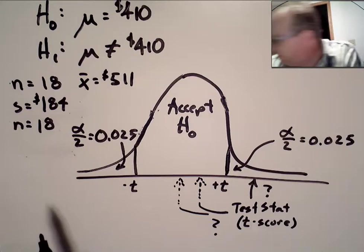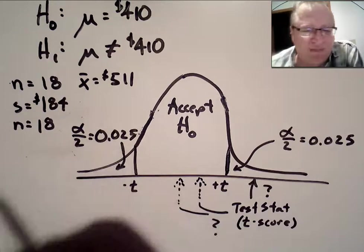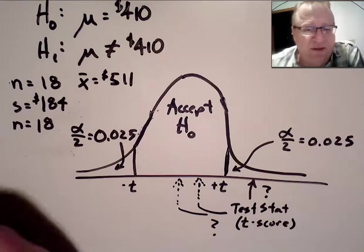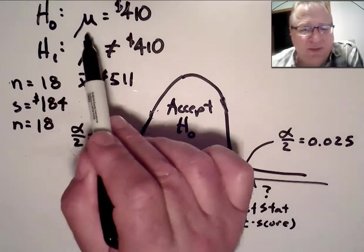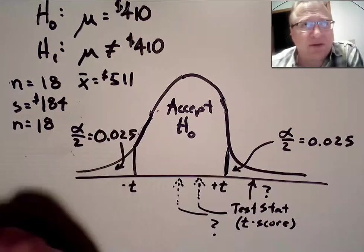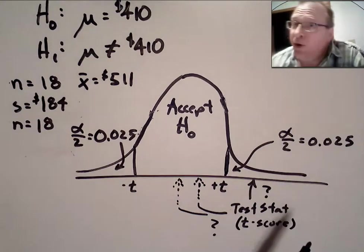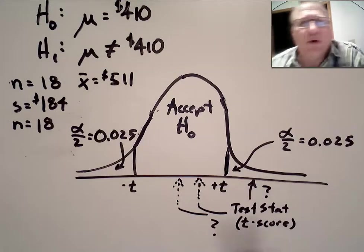This is an example out of your book on page 331. We're looking at the amount of money in people's accounts. The null hypothesis is that the population mean, the average amount that people have in their accounts is $410. The alternative hypothesis is that no, they don't have $410. They have something else, either more or less than $410.